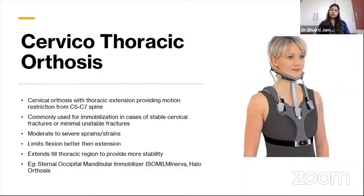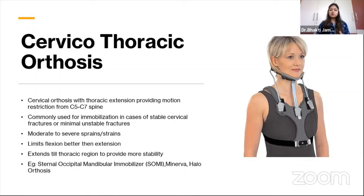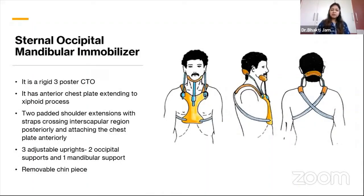Next is cervicothoracic orthosis, which has an extension to the thoracic region and provides motion restriction from C5 to C7 level of the spine. It is most commonly used for immobilization in stable cervical fractures or minimally unstable fractures, and for moderate to severe sprains — helping limit flexion better than extension. Examples are the sternal occipital mandibular immobilizer, popularly called the SOMI brace, the Minerva brace, and the halo orthosis.